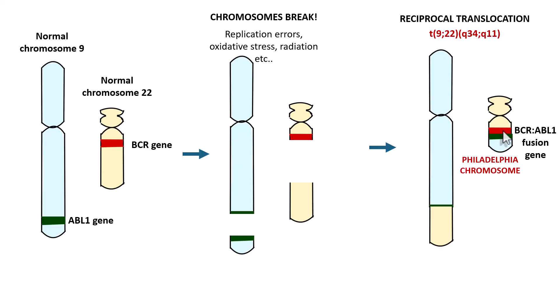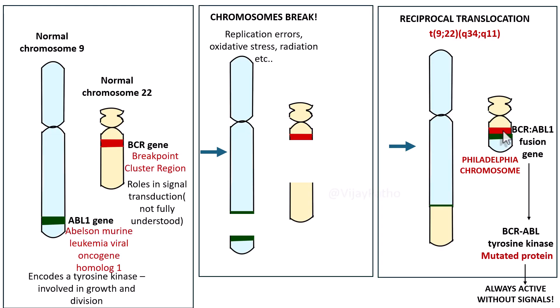What does this fusion gene encode? It encodes a tyrosine kinase protein again. Because it is a fusion gene, the tyrosine kinase encoded is a mutated protein. The size of this mutated protein is 210 kilodaltons — a bigger size compared to the normal tyrosine kinase which is around 120 to 130 kilodaltons. This mutated protein is always active; it does not need any growth factors or signaling, and that is the reason for development of chronic myeloid leukemia.